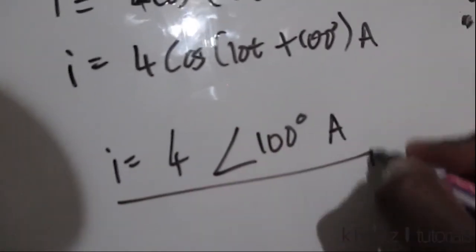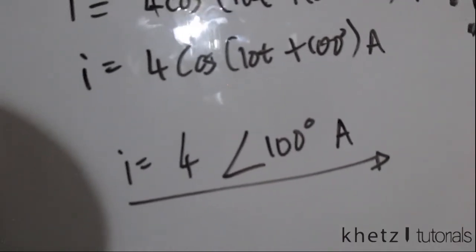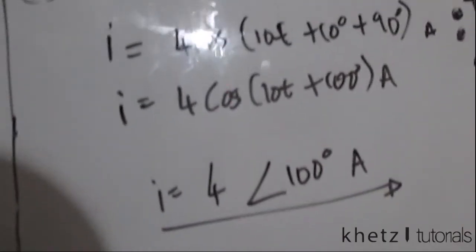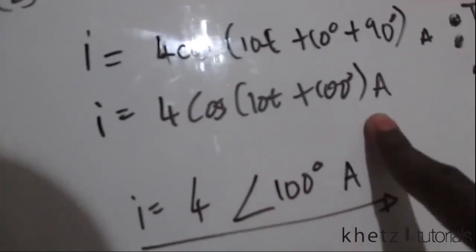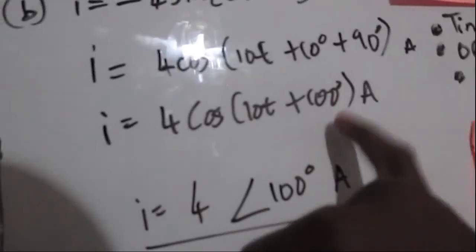This is how to transform a sinusoid into a phasor. First transform it into cosine form, and then take the amplitude and the phase.